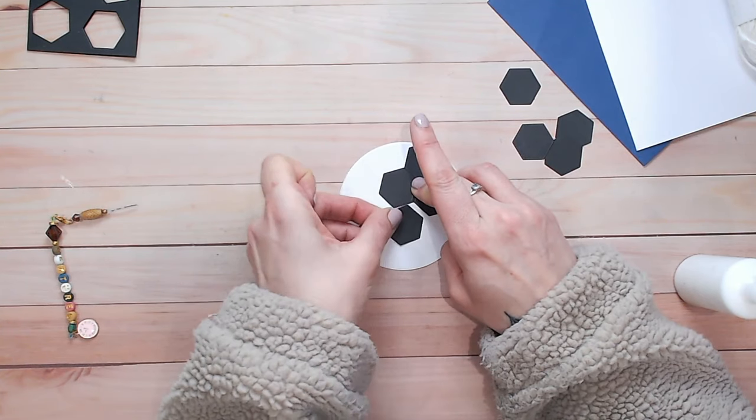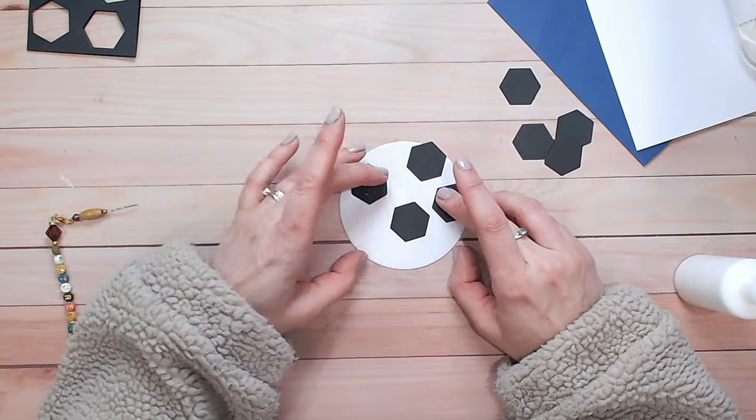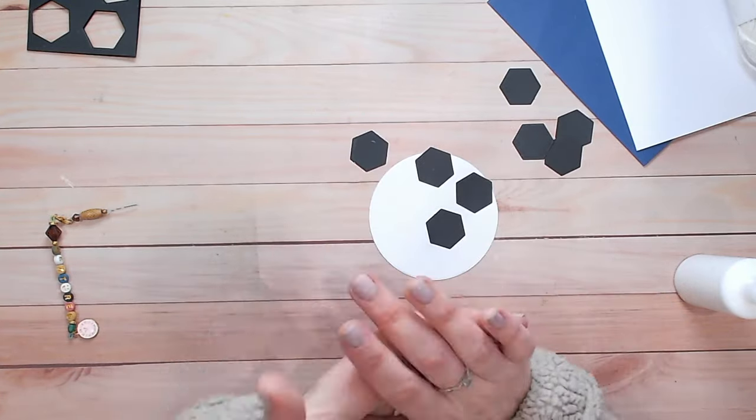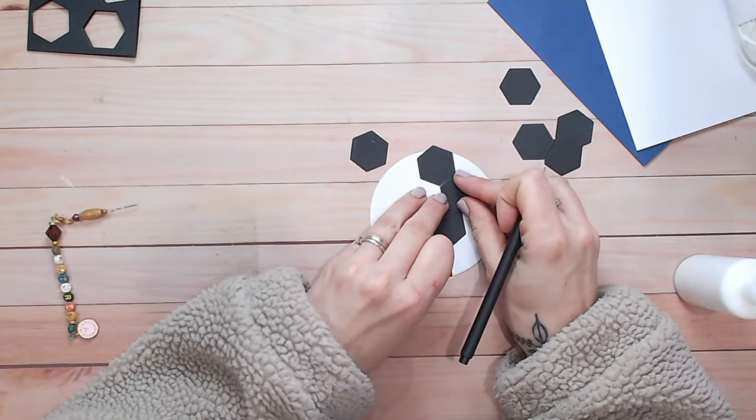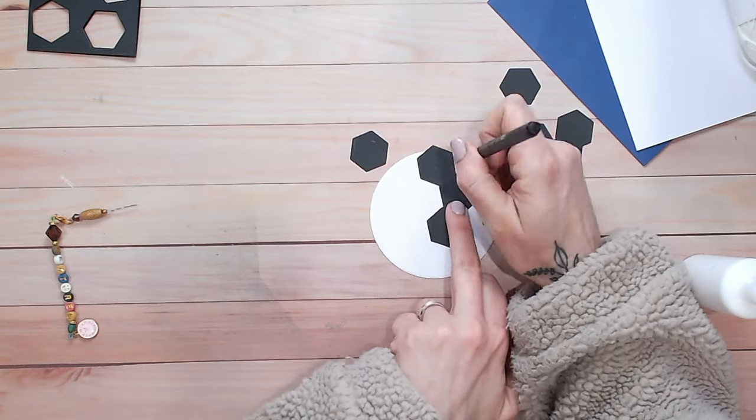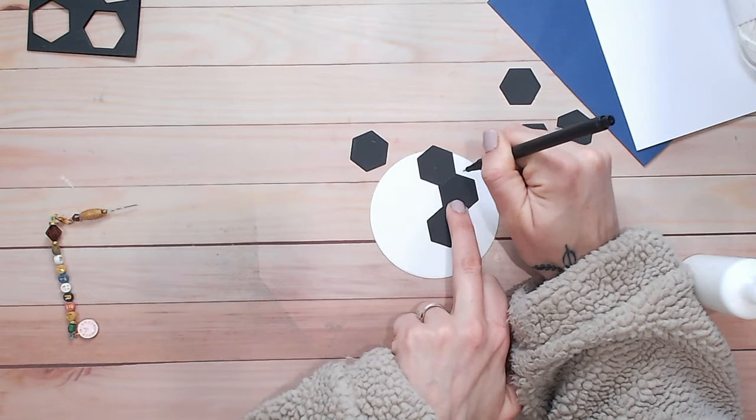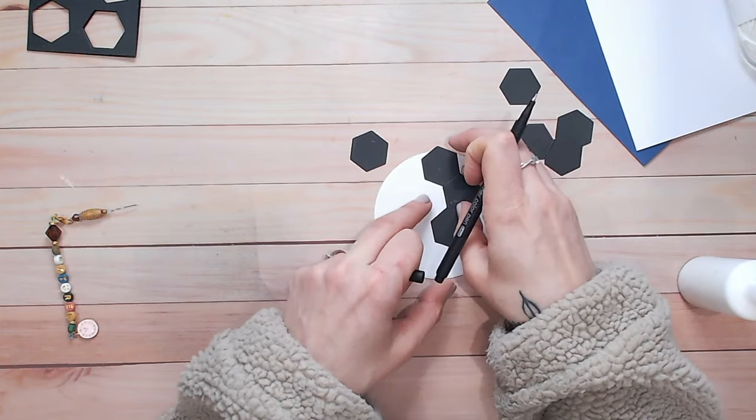Once you get the knack of this it takes no time at all. So I stuck down that one, removed the white ones and then I thought, do you know what, it looks a bit plain. So I decided to take a black fineliner, just a thin black pen and I'm going to draw around these black hexagons. That will just give us the outline for the white hexagons, kind of look like the stitching on the ball but also give me somewhere so I know where I'm placing my next hexagons as well.